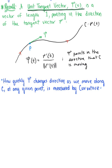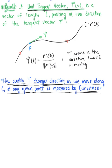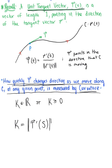How quickly your unit tangent vector changes direction as we move along the parametrized curve at any given point is measured by the curvature. Since we're defining this as how quickly the unit tangent vector changes direction, curvature kappa is going to be a non-negative scalar — kappa is an element of the real numbers such that kappa is greater than or equal to zero. We can define kappa as the magnitude of the rate at which the unit tangent vector changes with respect to arc length.